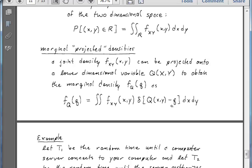This is now the Dirac delta function with Q of X and Y minus some specific value of the random variable q. So notice what's happening. When big Q of X and Y is not equal to q, this thing returns zero.